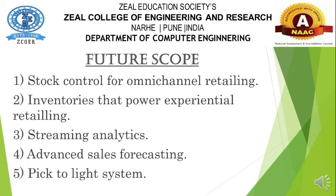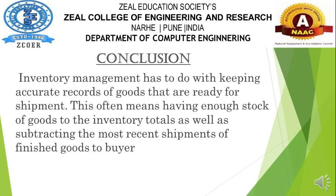Future scope includes stock control for omni-channel retailing inventories, experimental retailing streaming analytics, advances in forecasting, and pick-to-light systems. Conclusion: inventory management involves keeping accurate records of goods ready for shipment, ensuring enough stock in inventory totals and accounting for the most recent shipments of finished goods.